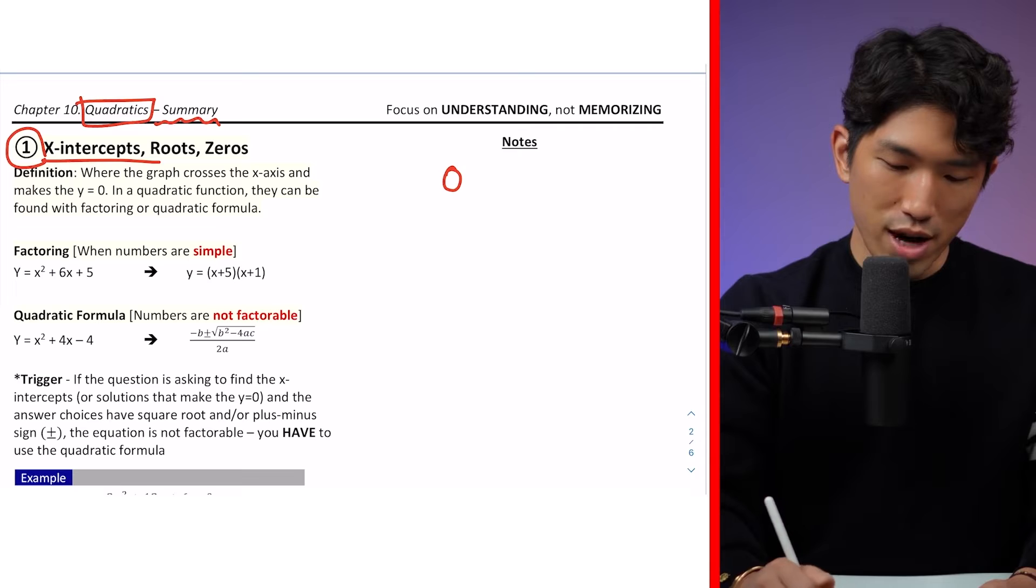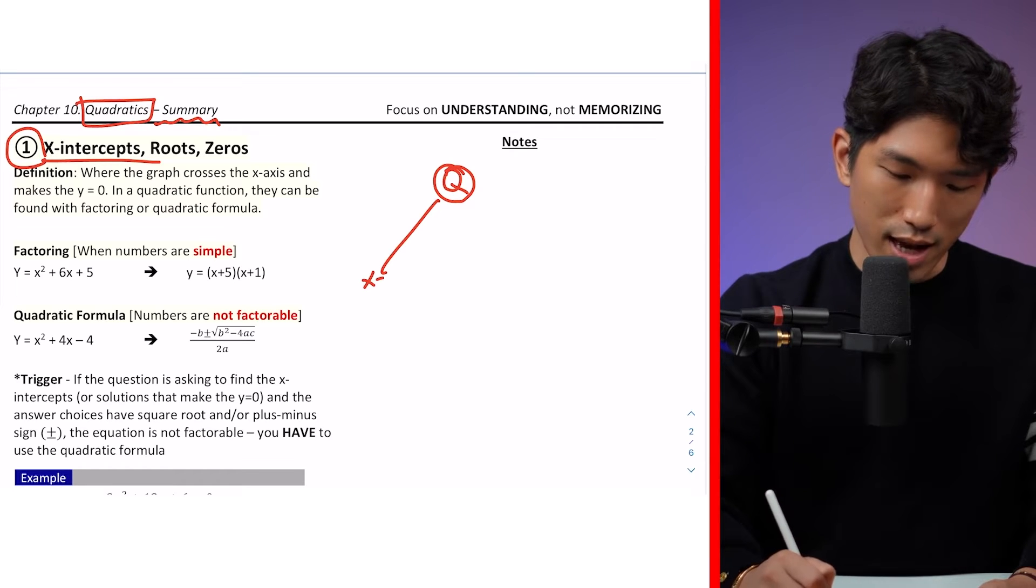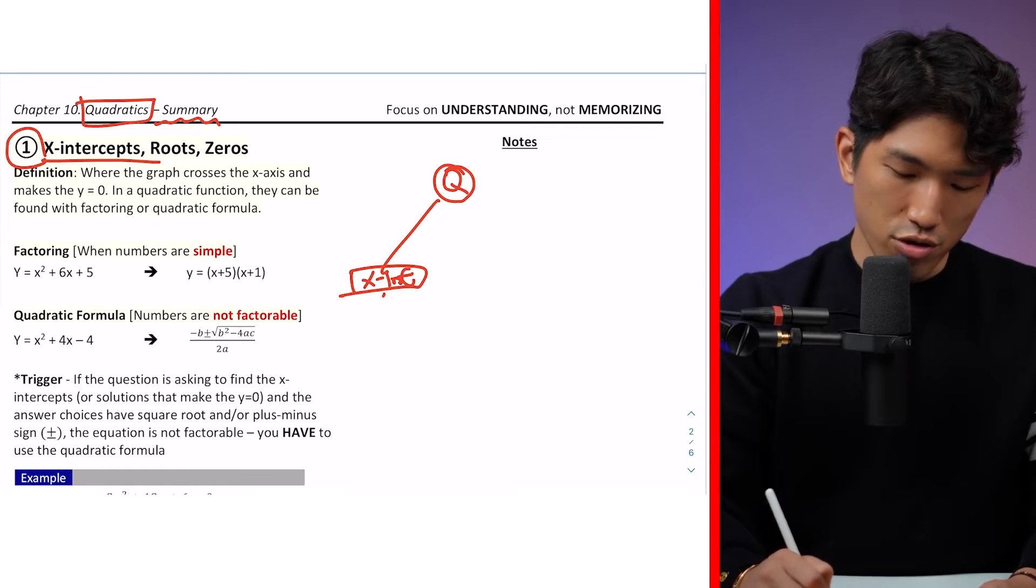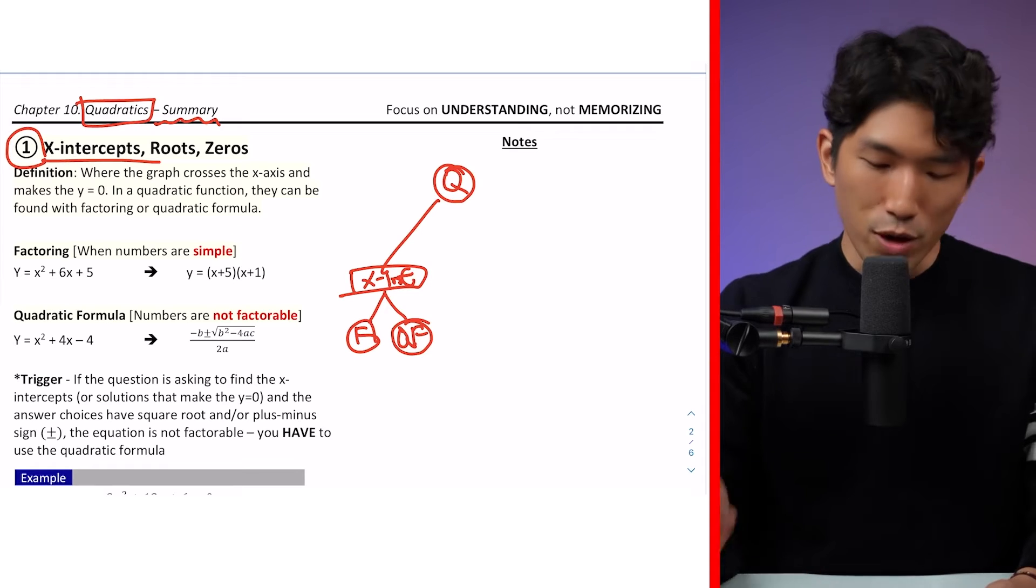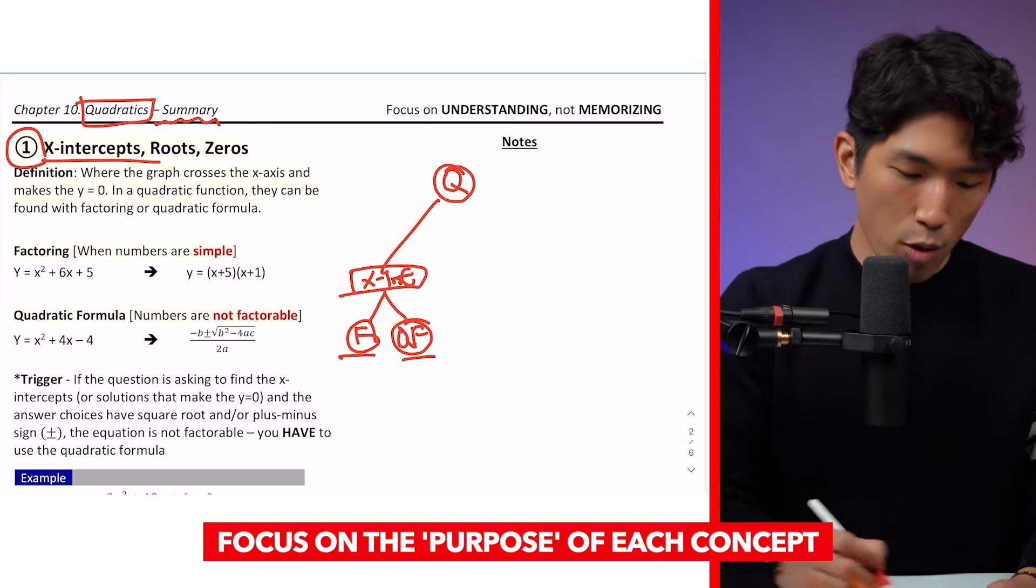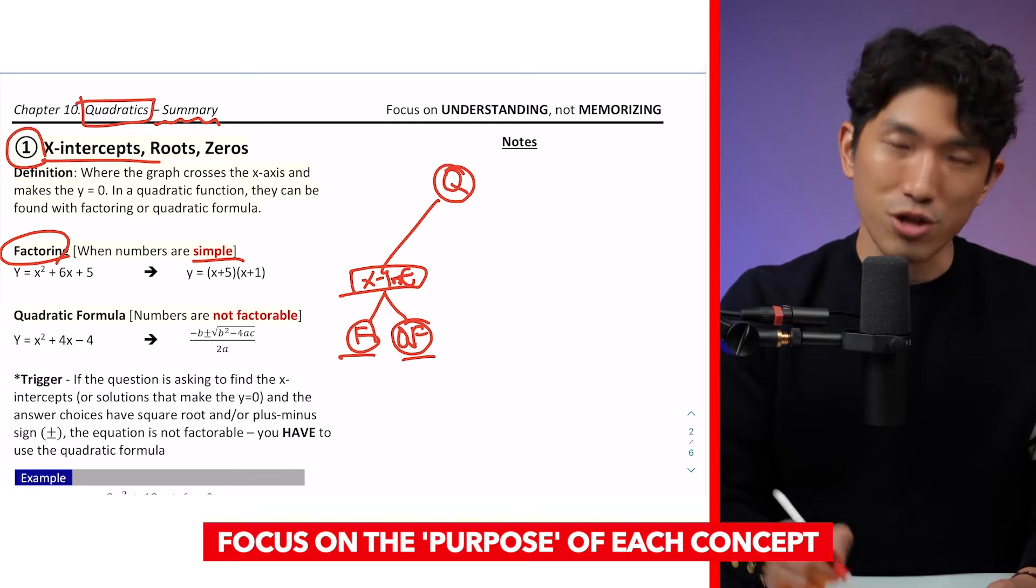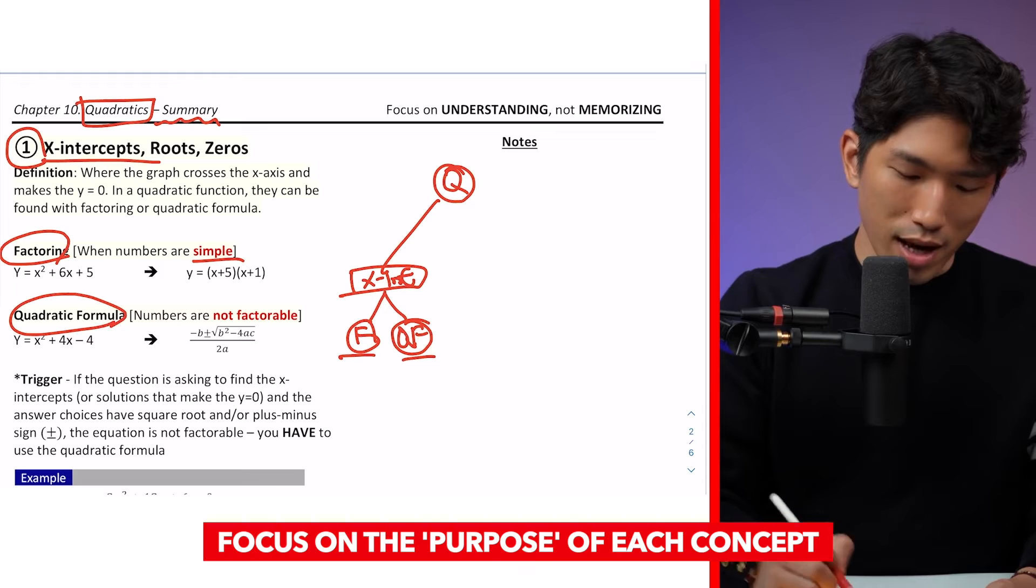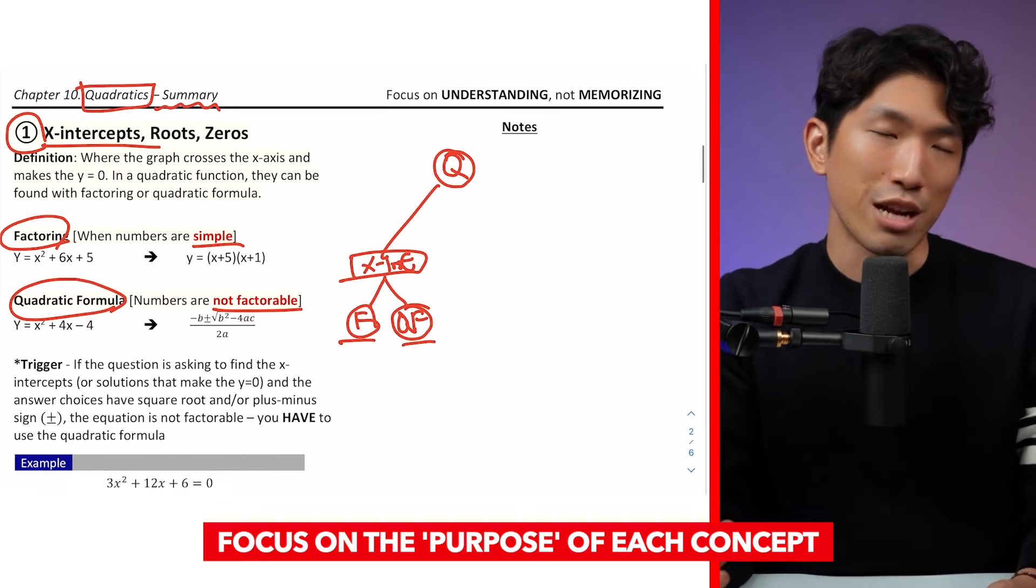So, for example, when it comes to quadratics, it's going to be testing you on how to find the x-intercepts. And to do so, you're going to need to know how to use the factoring and then how to use the quadratic formula. And what's the difference and when do we use each of them? Well, factoring, you use it when the equation is simple and factorable. And then you use the quadratic formula if the equation is not factorable.